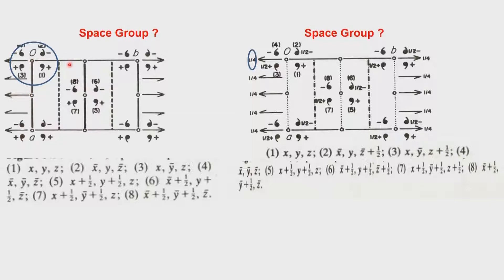What is very interesting is that apart from the presence of the twofold axis and the mirror, we also develop a glide plane at one-fourth. That is because if we work out the relationships between points 1, 2, 3, 4 and 5, 6, 7, 8, we will see the presence of a one-fourth glide plane operation.